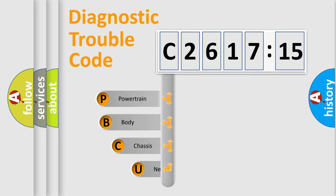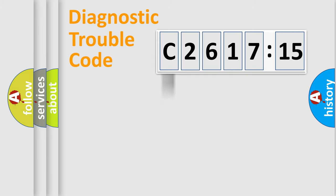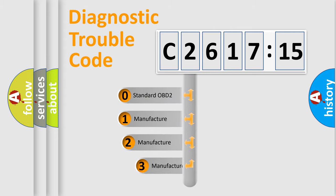First, let's look at the history of diagnostic fault code composition according to the OBD2 protocol, which is unified for all automakers since 2000. We divide the electric system of automobile into the four basic units: Powertrain, Body, Chassis, and Network. This distribution is defined in the first character of the code.